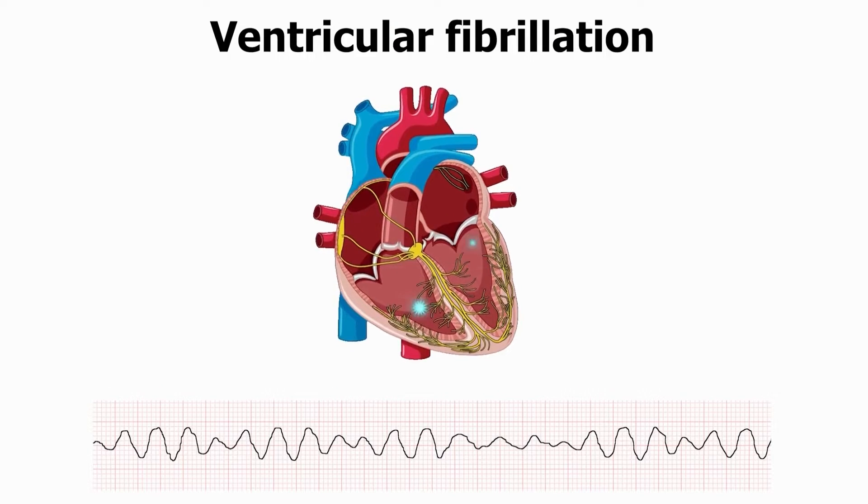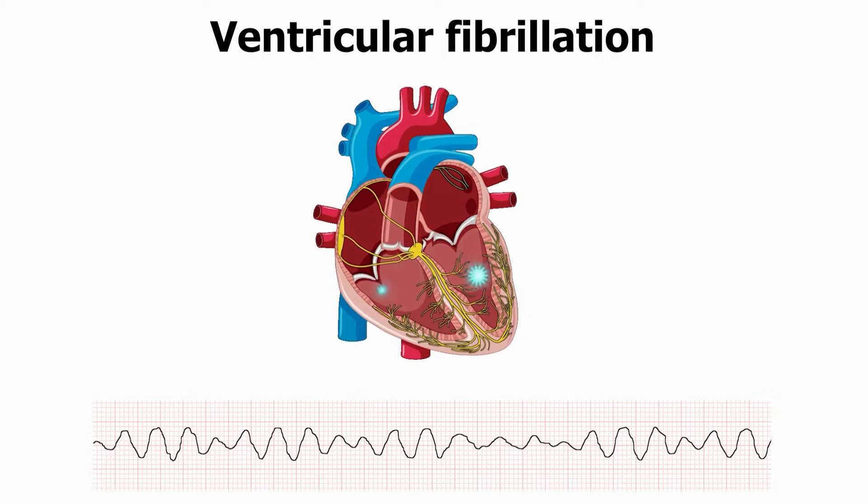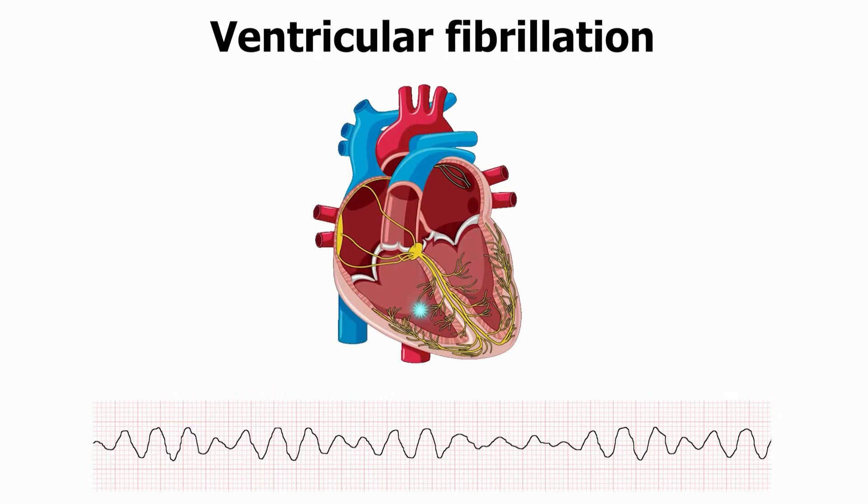Ventricular fibrillation is the most common electrical disruption causing sudden cardiac death. It denotes chaotic, unorganized ventricular activity with more than 300 beats per minute and little structured ventricular activity or contraction, resulting in hemodynamic collapse.